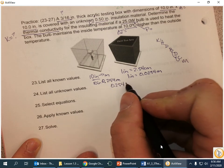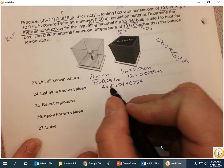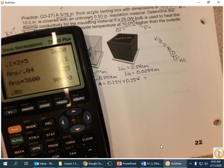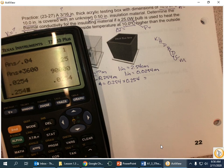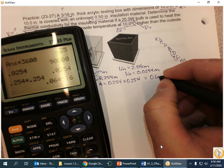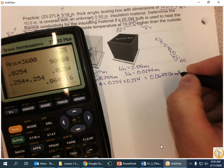0.254 times 0.254 will give me the area, and that is 0.064516 meters squared. That's going to be important for me.